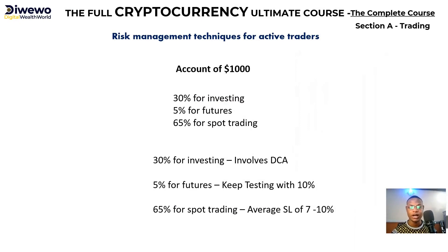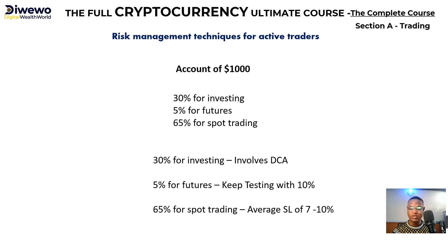I'm going to be using this particular account as an example — a one thousand dollar account. This template is one I use for my students because it's very important. If you are trading and you have a one thousand dollar account, you can't be using the same amount to trade spot, futures, and investing, because they all come with different risks. You can't trade futures the way you trade spot.